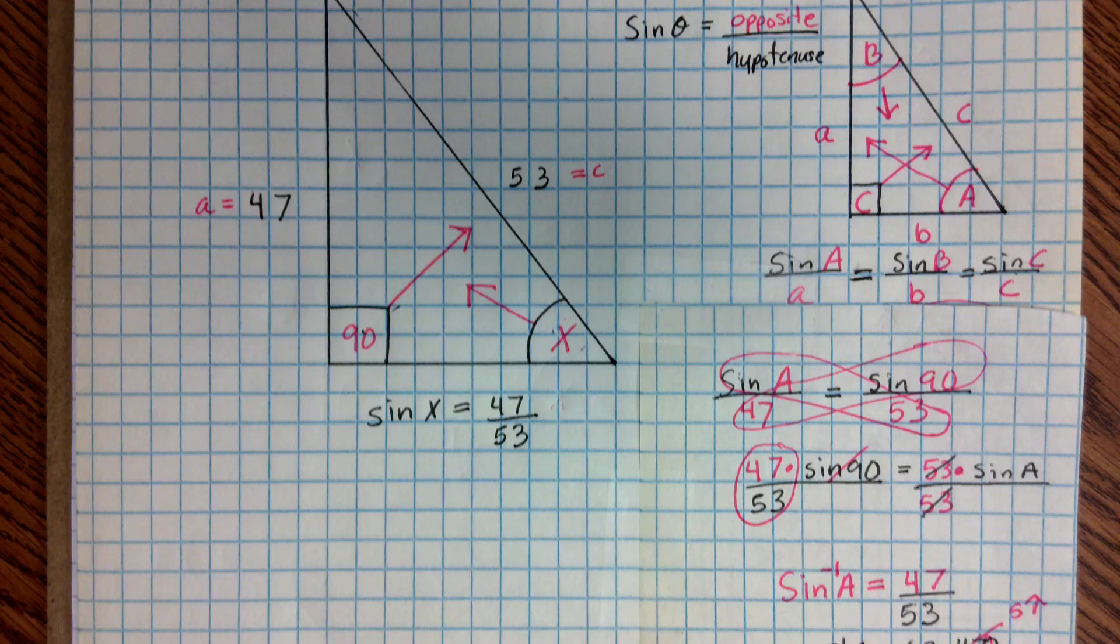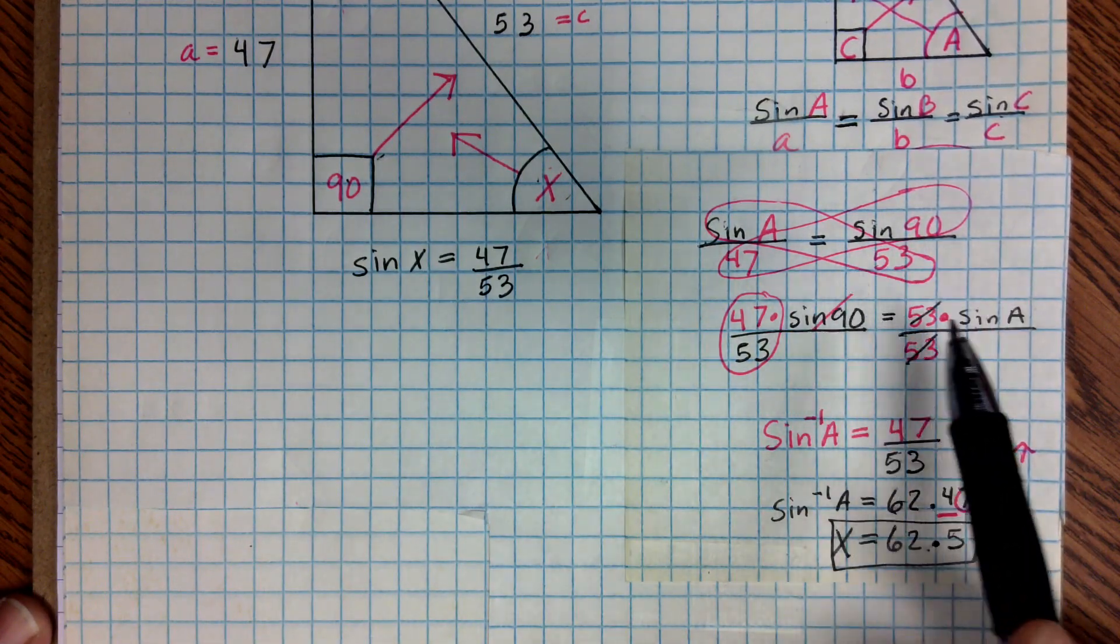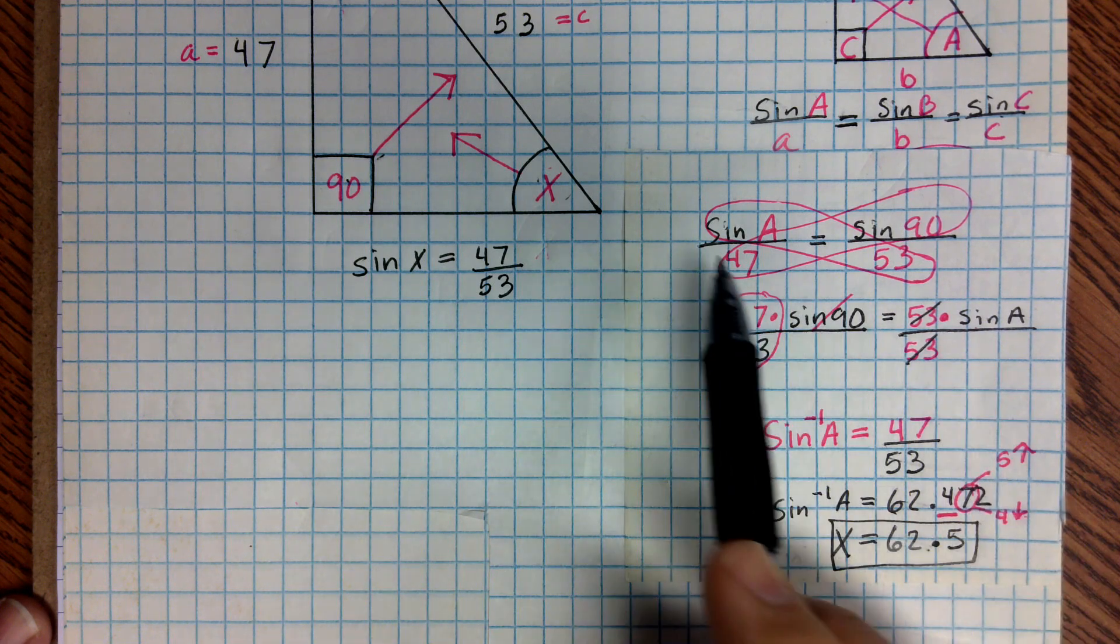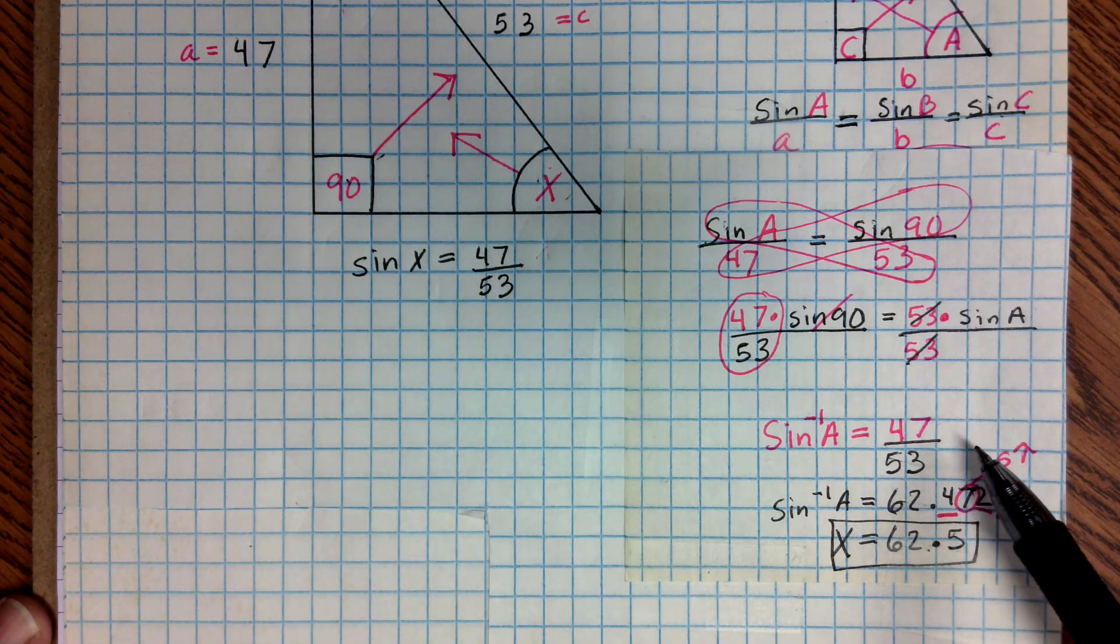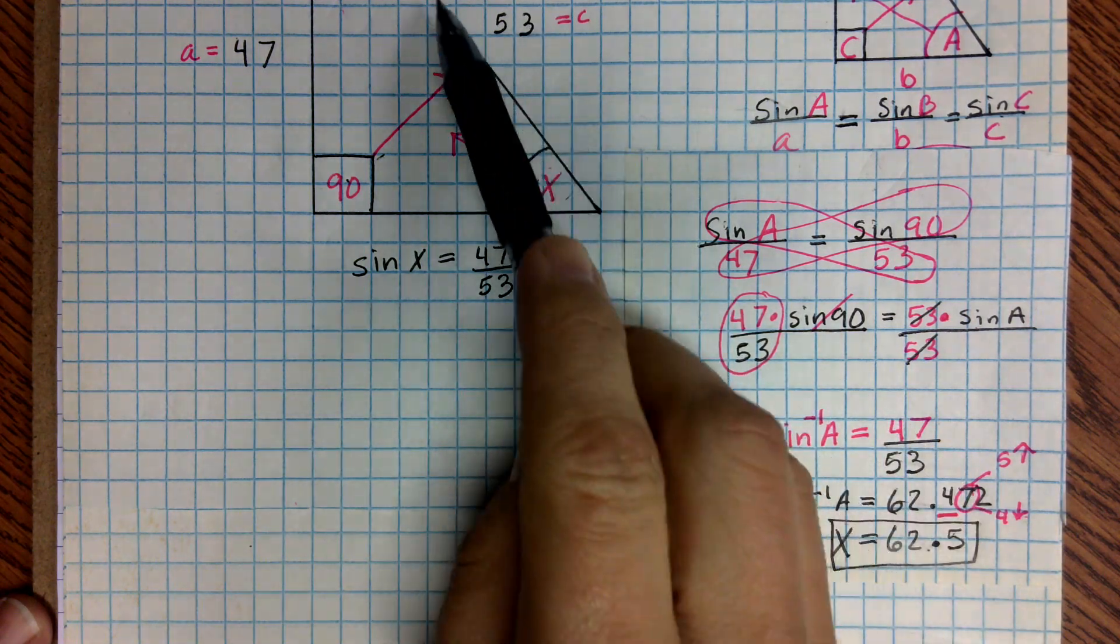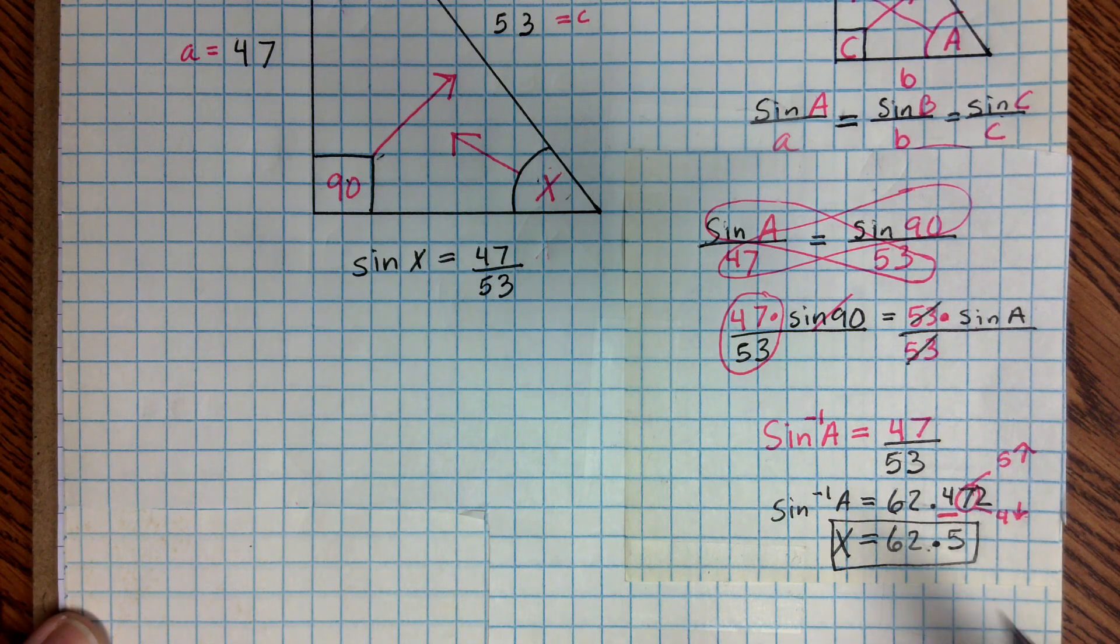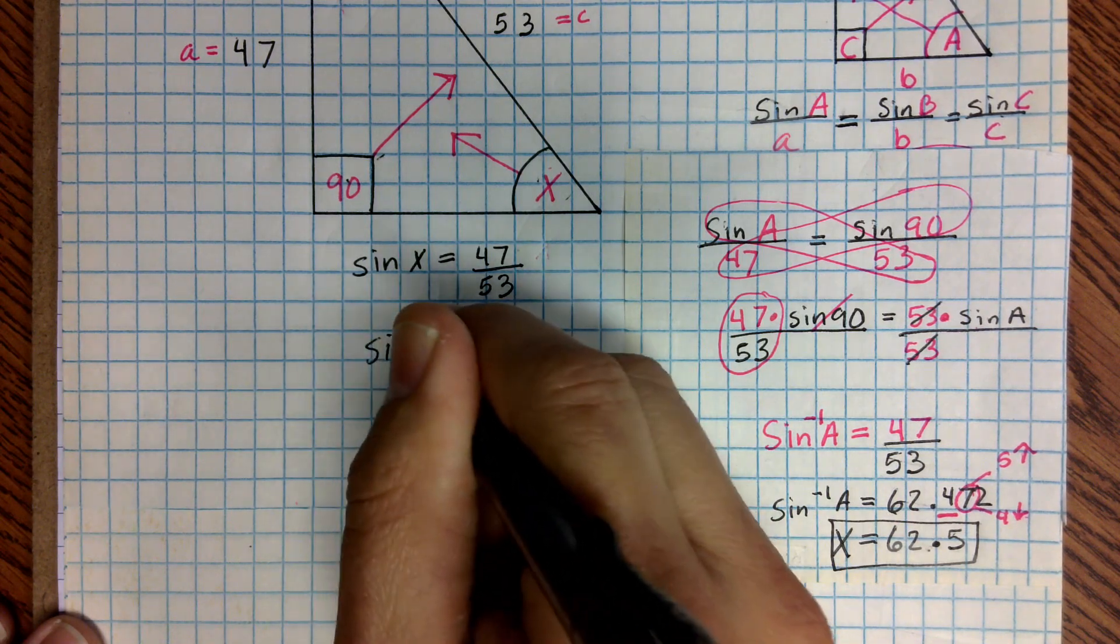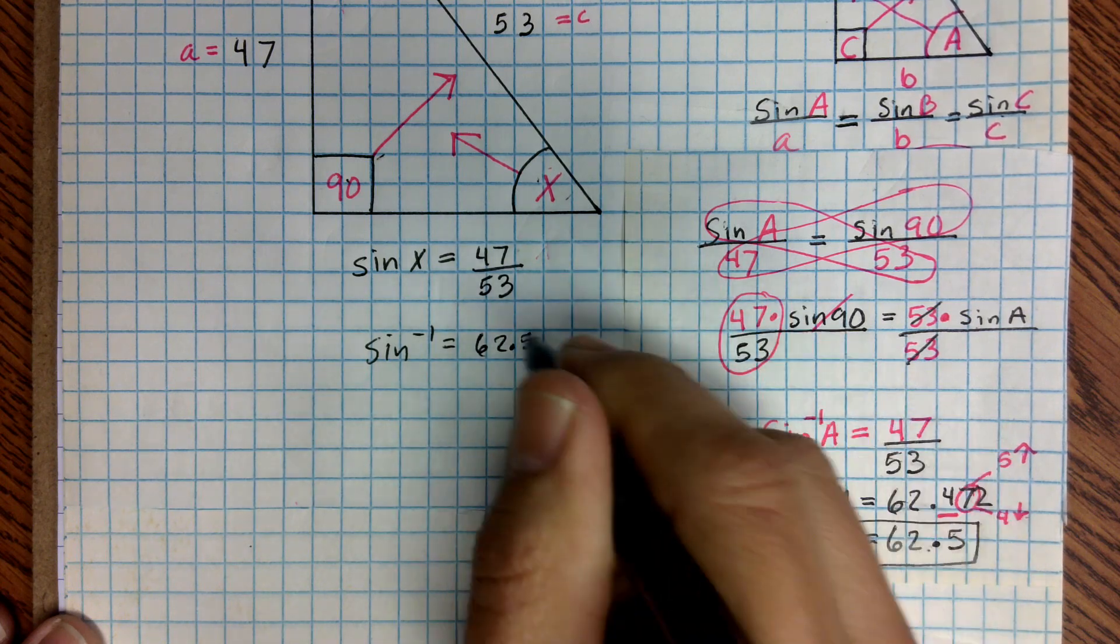And if you notice, if I go back over here, that's what we ended up with. Now we did all this work, and I showed you what was going on, but the fact is, all we did was put the value of the side of the triangle that was opposite of this angle A in the numerator, and then we put the hypotenuse, which is 53, that's that longest side of the triangle, in our denominator. So if you can remember to put the opposite over the hypotenuse, and then take sine inverse of it, you will end up with your answer, 62.5 after rounding.